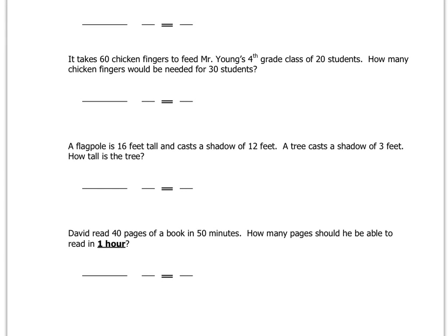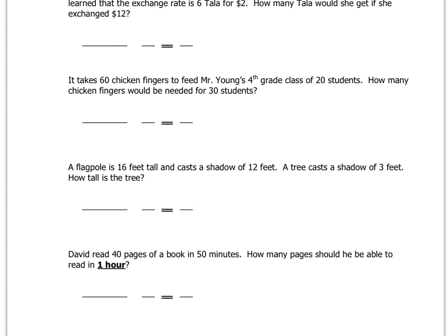Let's do another one. David read 40 pages of a book in 50 minutes. How many pages should he be able to read in one hour? Notice that the rate given is in minutes, but the question asks about one hour. So we're going to have to convert — remember that one hour equals 60 minutes. We'll use 60 instead of 1. A lot of people might get confused and just use a 1, and that won't turn out right.